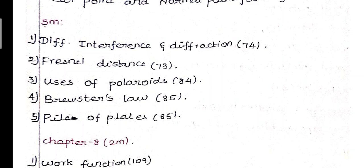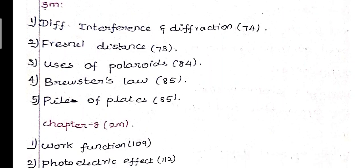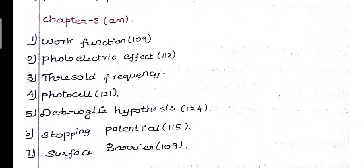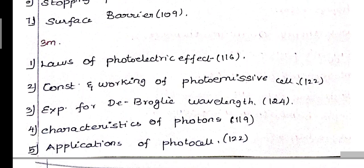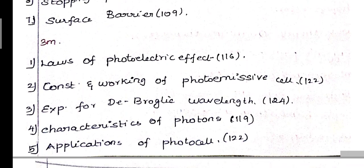Chapter 7 continued: 5th question - piles of plates, page 85. Next Chapter 8 2-mark questions: 1st question - work function, page 109. 2nd question - photoelectric effect, page 112. 3rd question - threshold frequency. 4th question - photocell, page 121. 5th question - de Broglie hypothesis, page 124. 6th question - stopping potential, page 115. 7th question - surface barrier, page 109. 3-mark: laws of photoelectric effect, page 116. Construction and working of photoemissive cell, page 122.